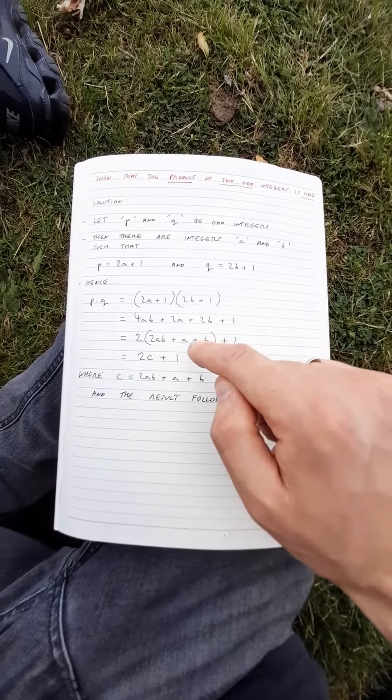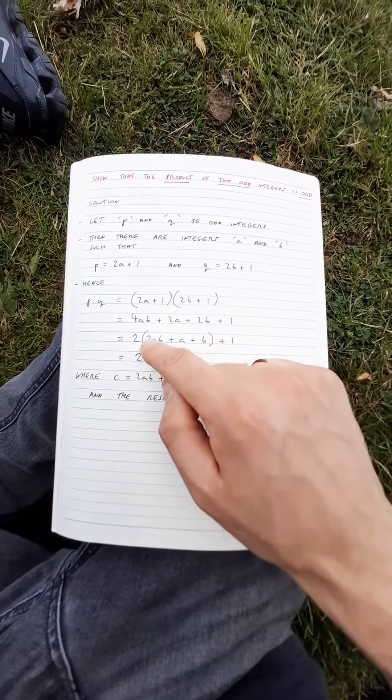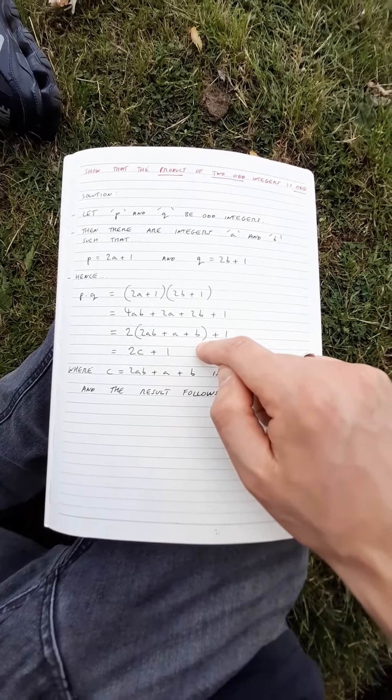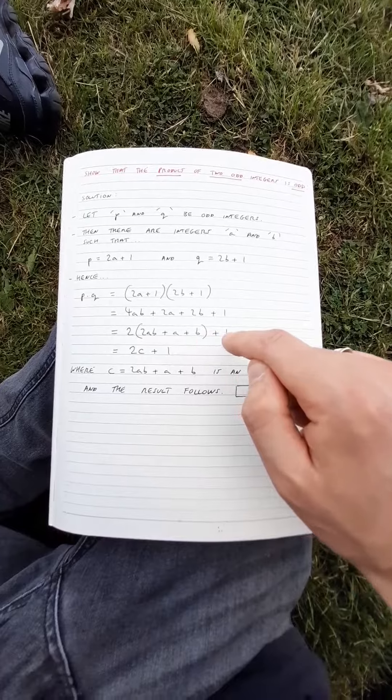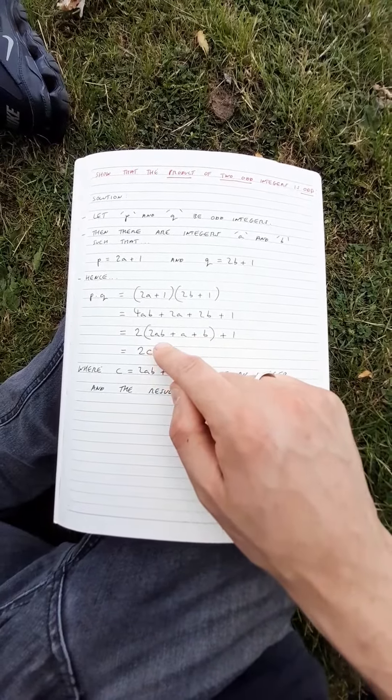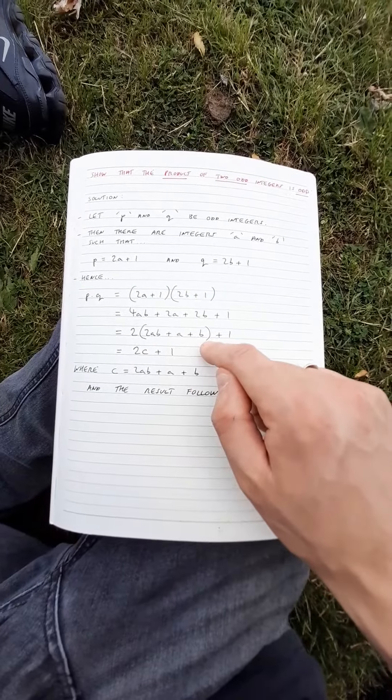And this can be simplified to 2 times 2ab plus a plus b in brackets plus 1. Now here we can say that c is 2ab plus a plus b.